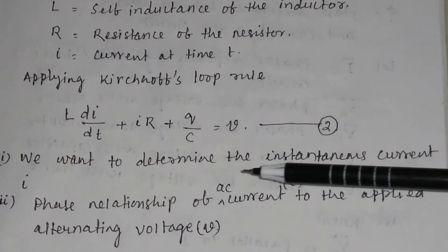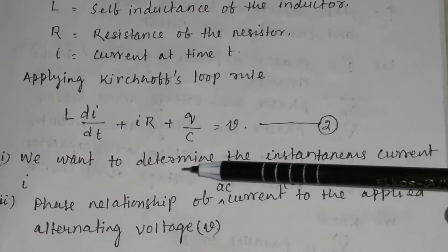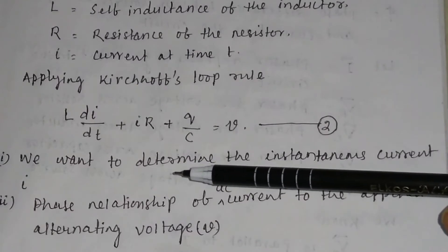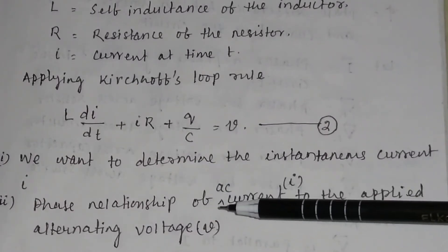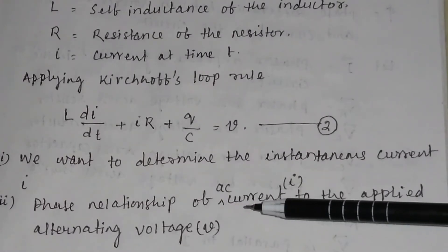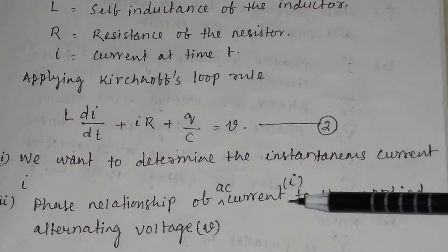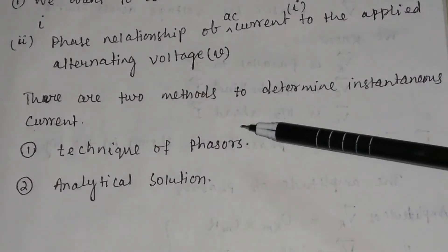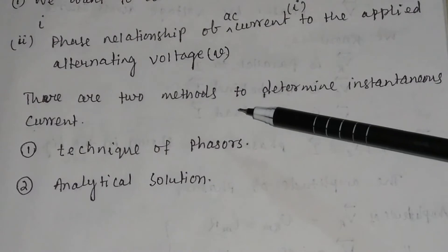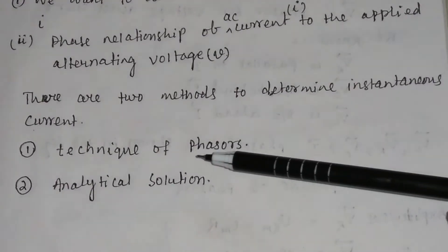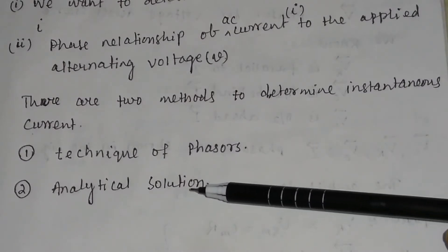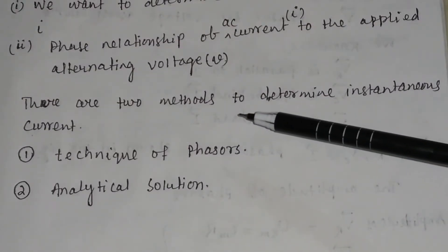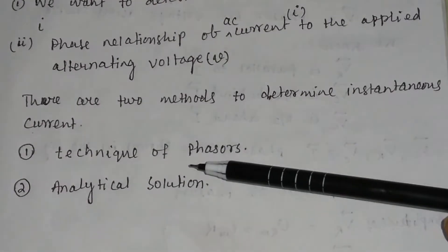Here we want to determine the instantaneous current I. We have taken the instantaneous source voltage and we will calculate the instantaneous current. We also determine the phase relationship of the AC current I to the applied alternating voltage V. There are two methods: number one is the technique of phasors, and number two is the analytical solution.